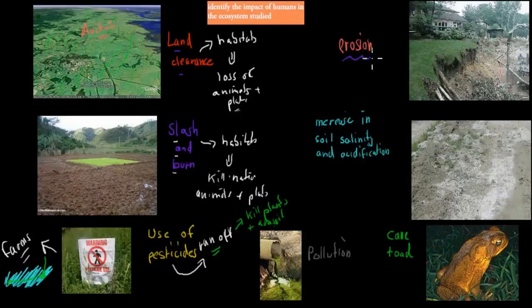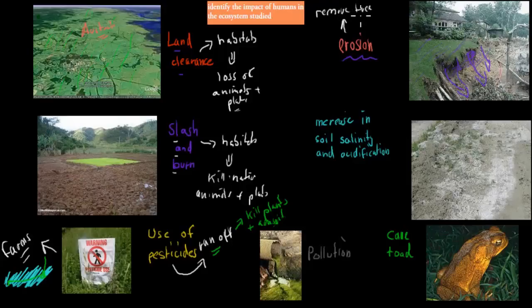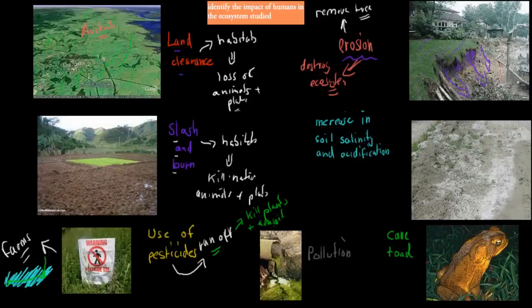Erosion is when mud or rocks come off and slide away — massive mudslides are an extreme example. Rain and storms can erode beaches or rocky areas over time. Erosion also happens because we remove trees: trees are meant to keep soil in place, and with fewer trees, soil can escape and run off. The problem with erosion is it destroys the actual environment and ecosystem, because plants and animals can no longer live there. Erosion is a big problem especially where humans have removed trees.